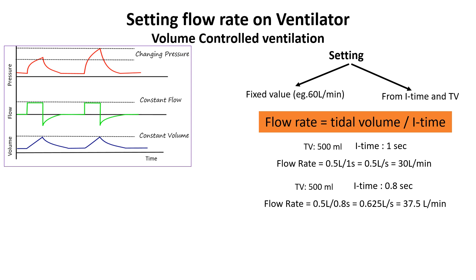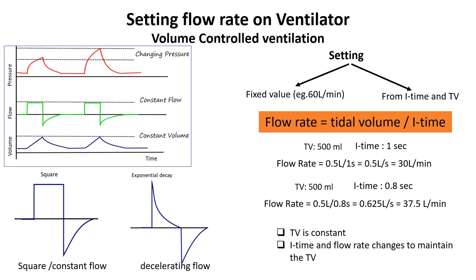If we set the inspiratory time, the ventilator automatically adjusts the flow rate to deliver the set tidal volume within that time. If we set the flow rate directly, the inspiratory time is determined by the time required to deliver the tidal volume. Some ventilators also allow selection of flow patterns such as square or decelerating flow. Note that a resting patient may need at least 40 to 60 liters per minute of inspiratory flow, which is considerably higher than the value from a volume-controlled square-wave calculation. Ventilator settings should also consider inspiratory flow demand, compliance, and resistance, though this method provides insight into how tidal volume, inspiratory time, and flow rate are interconnected.